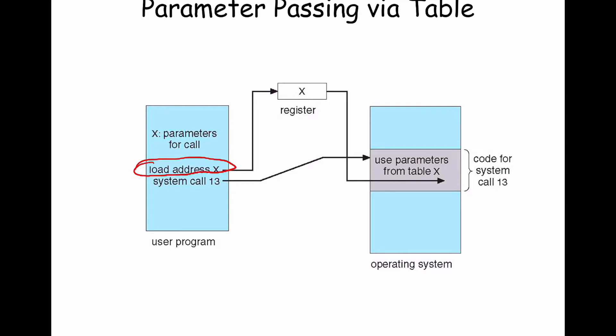The user process thinks of it as read, or open, or whatever — but the user program has no idea what the operating system is doing. All it knows is that it can expect back a certain result when it specifies some parameters and issues the system call.